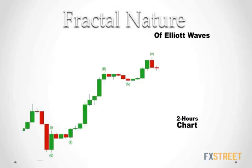This is a two-hour chart of Cable — the British Pound/US Dollar pair. On this two-hour chart, we can clearly see a five-wave advance. But what will we see if we look at the one-hour chart, for instance? In theory, we should be able to see each of these waves subdividing into smaller waves. So let's move to the one-hour chart and see if we can spot any differences.